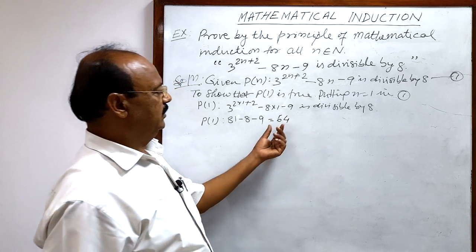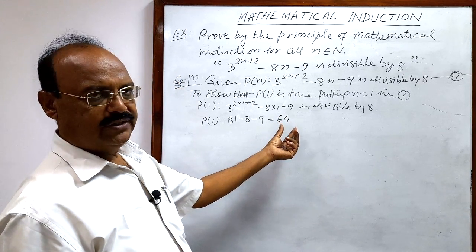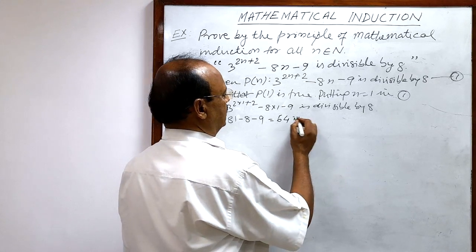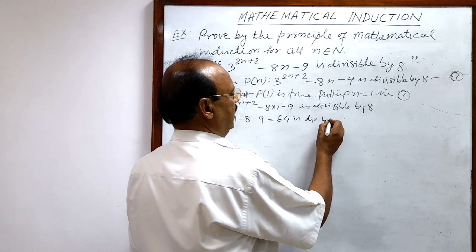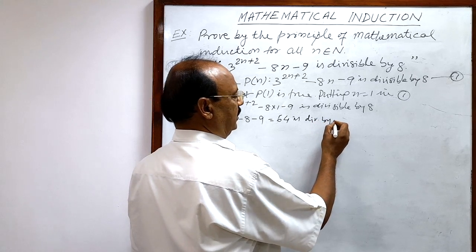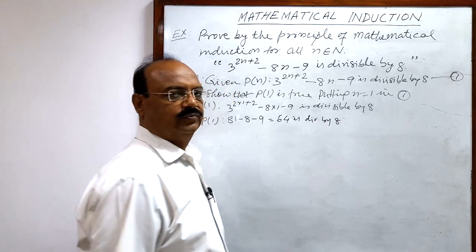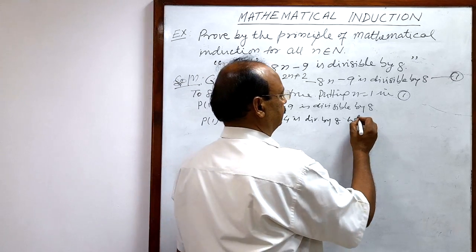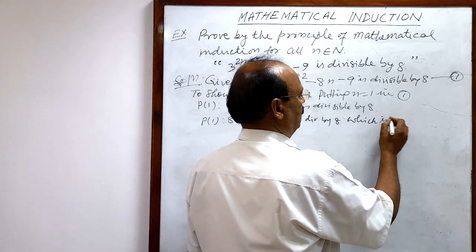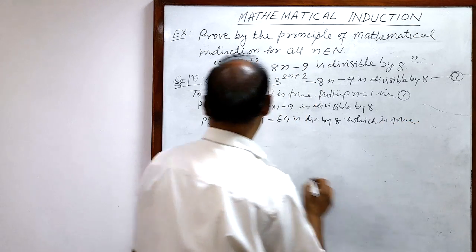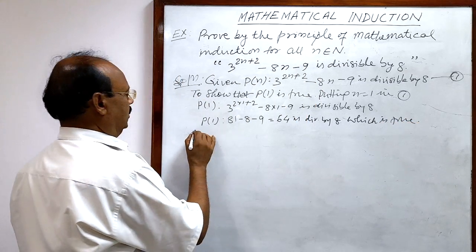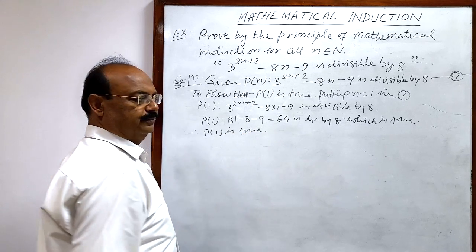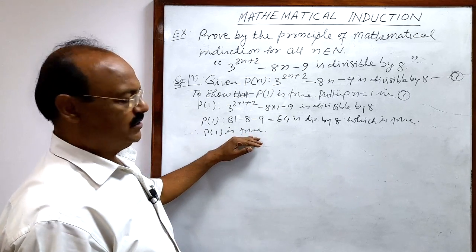We know that 64 is divisible by 8, since 8 times 8 equals 64. Therefore P(1) is true. This completes the first step.